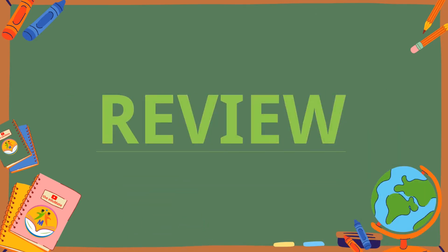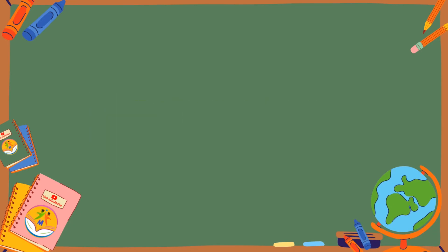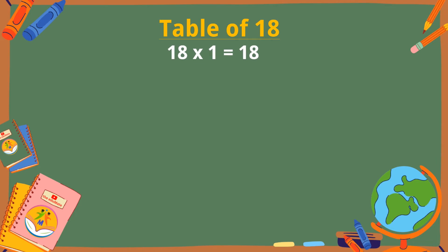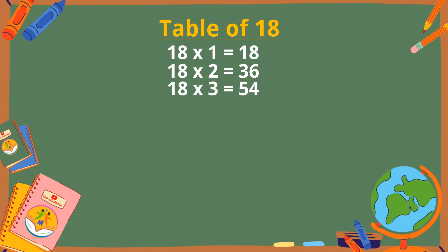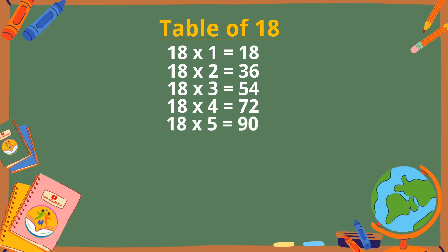Let's revise the table of 18. 18 ones are 18. 18 twos are 36. 18 threes are 54. 18 fours are 72. 18 fives are 90.